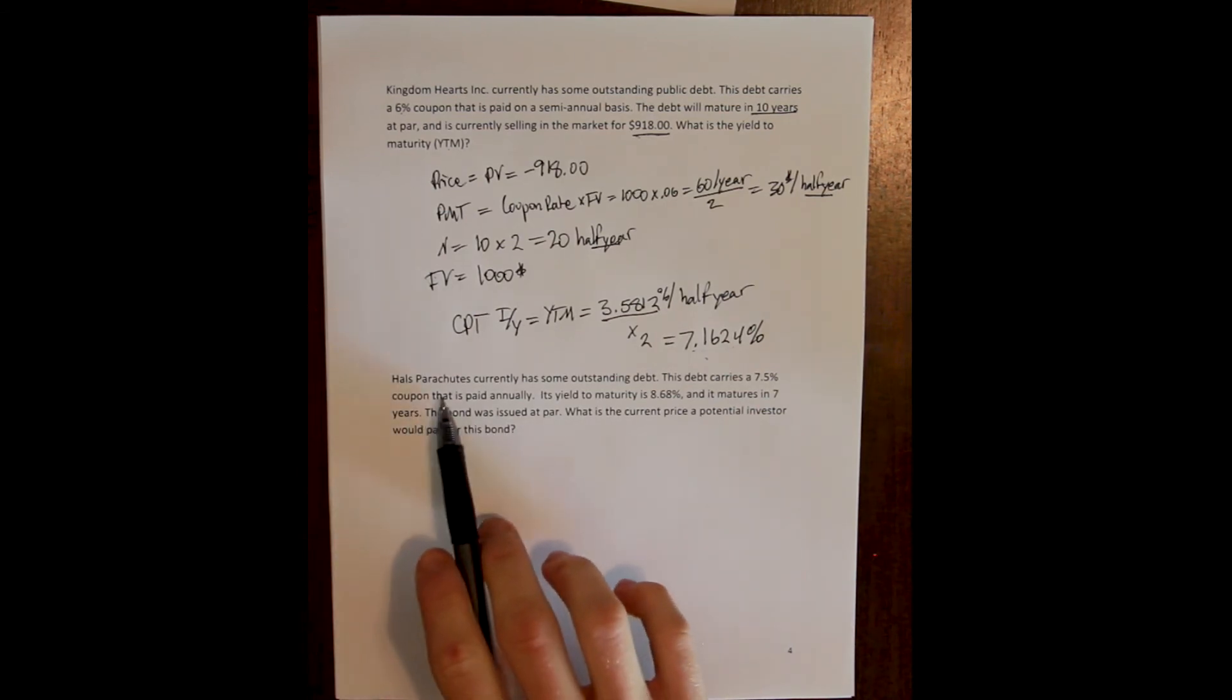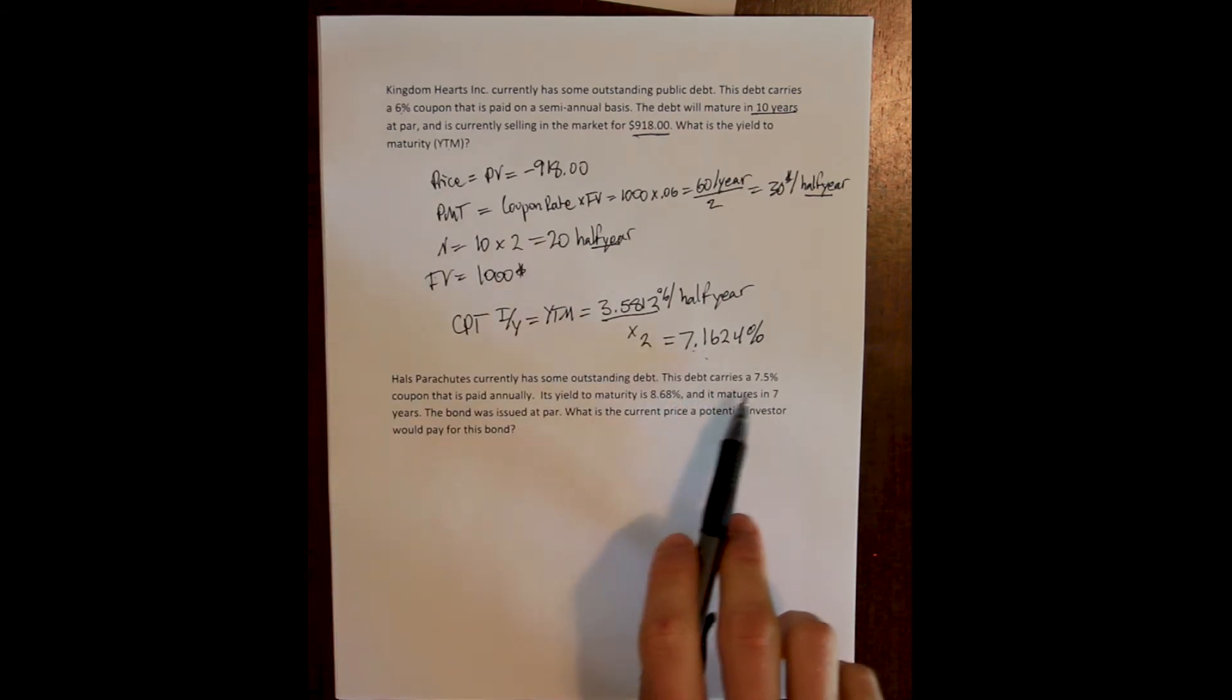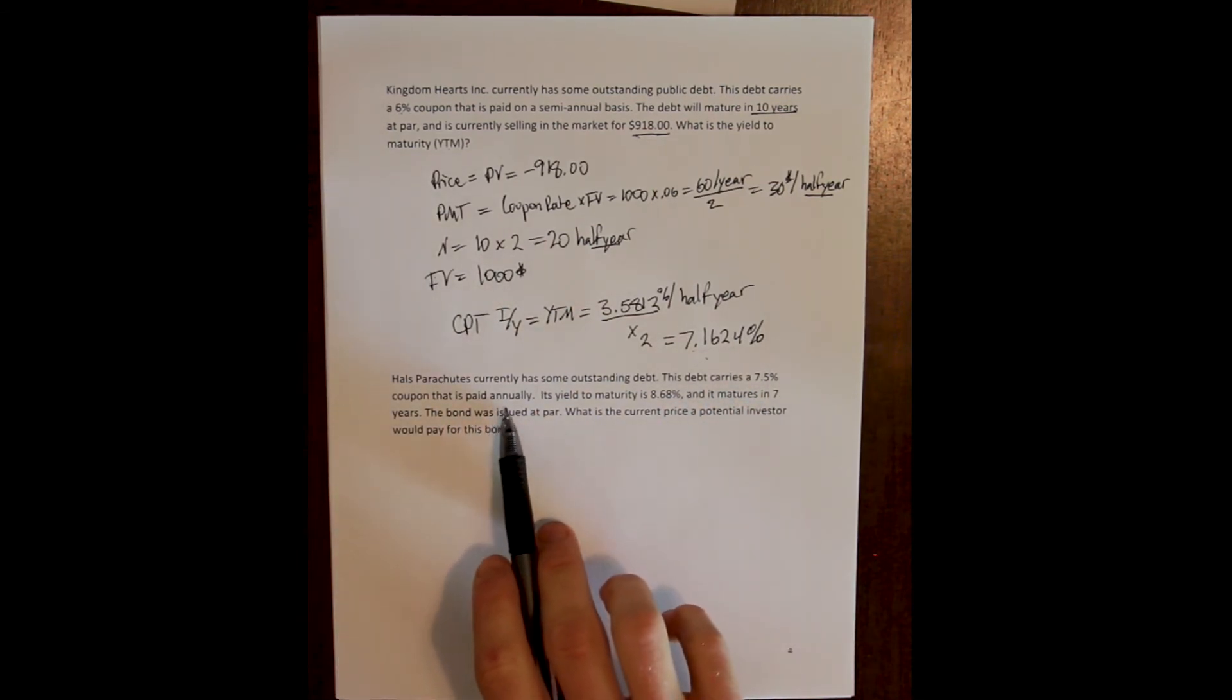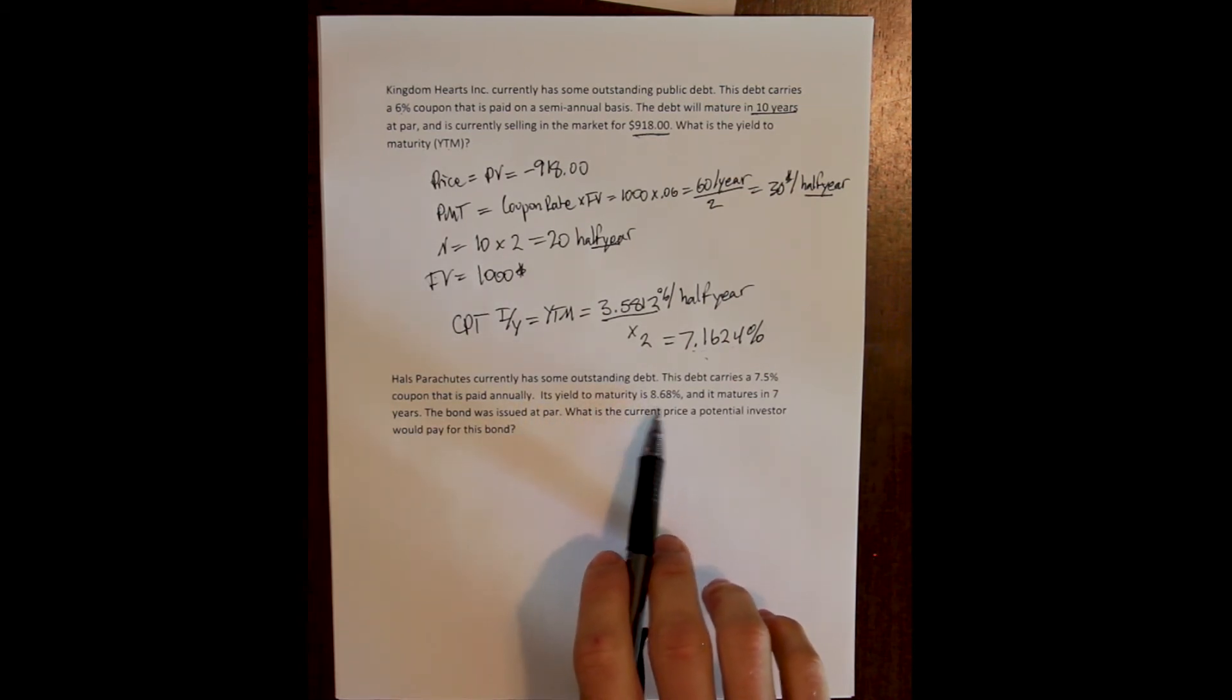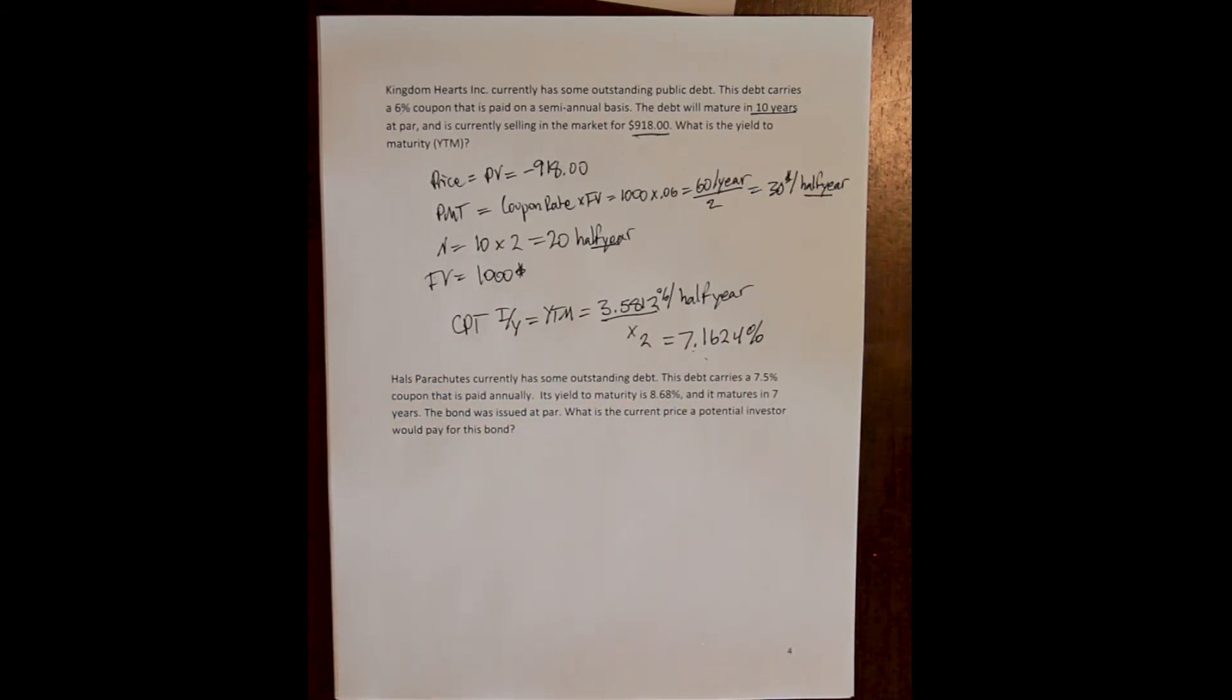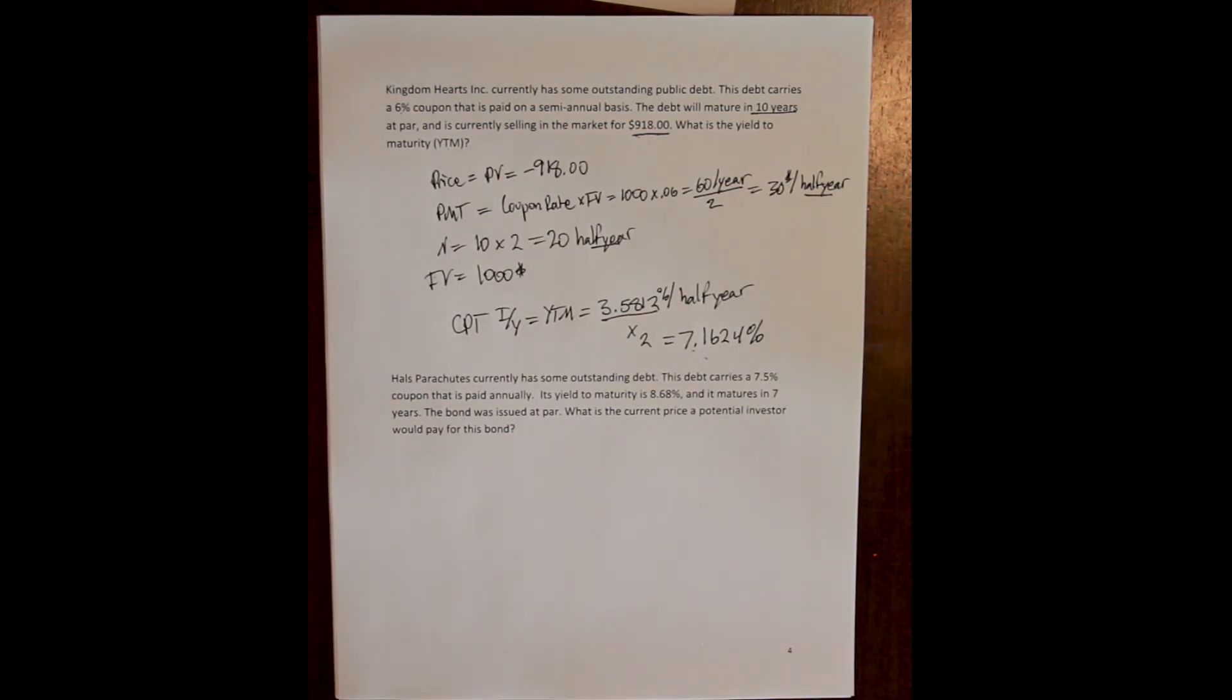Now, the second example says, Howell's Parachutes currently has some outstanding debt. This debt carries a 7.5% coupon that is paid annually. But the yield to maturity is 8.68%. And the bond matures in 7 years. Now, the bond is issued at par, which means it is sold for its face value. What is the current price a potential investor would pay for this bond?